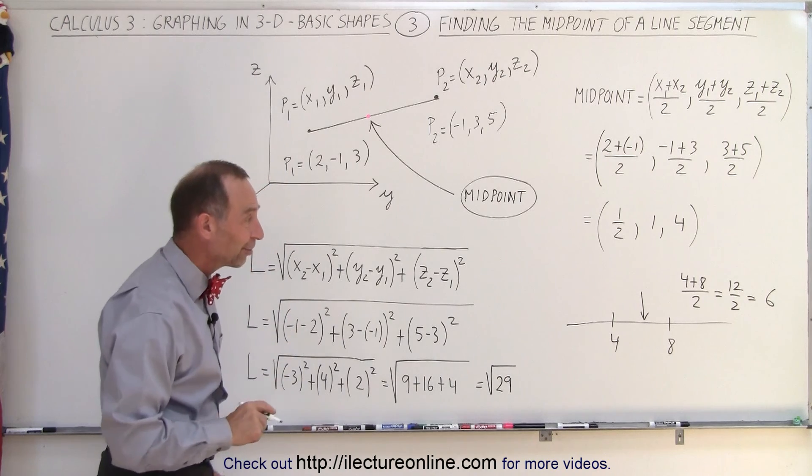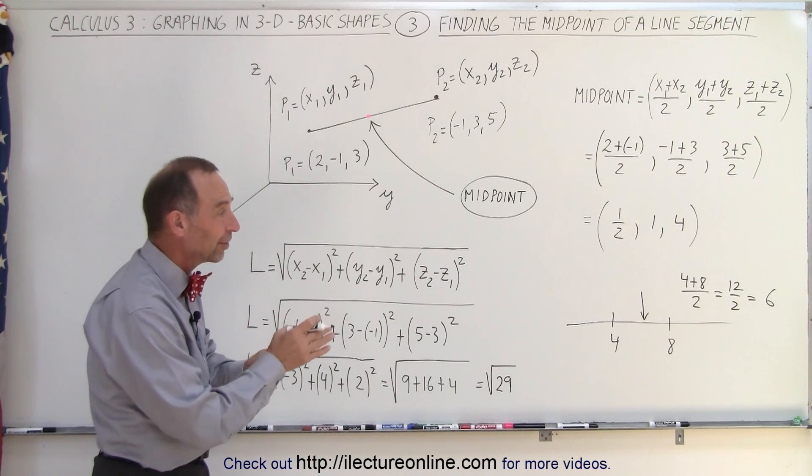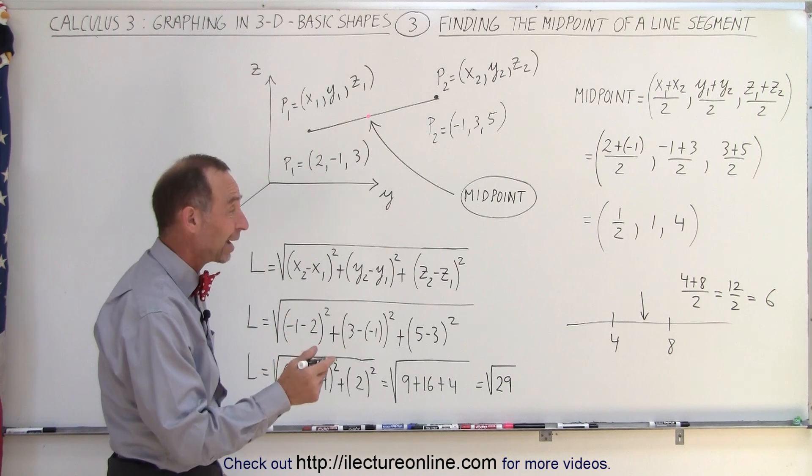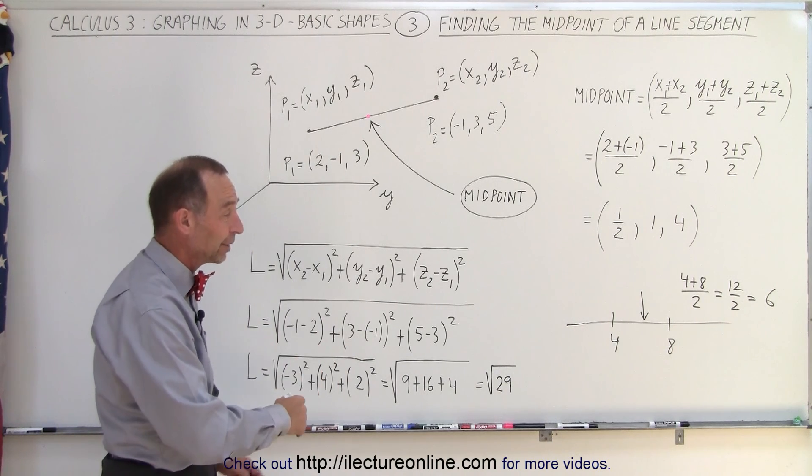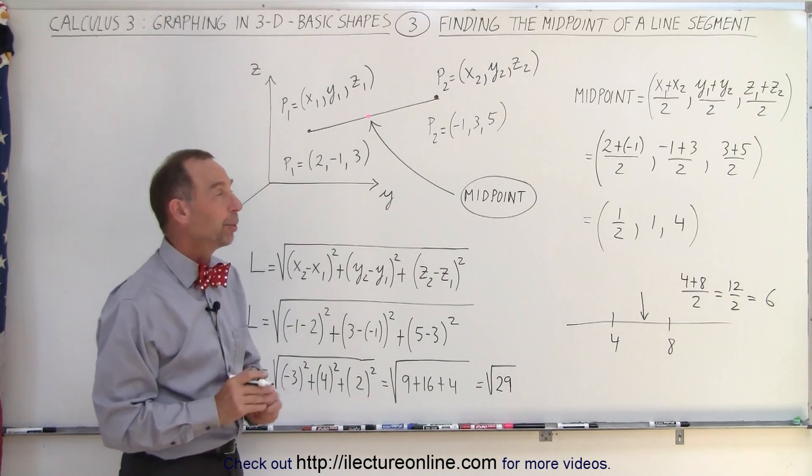You can find the right answer by simply adding the two points together, dividing by 2 instead of subtracting. If you were to subtract, 8 minus 4 gives you 4 divided by 2, will not give you the midpoint.